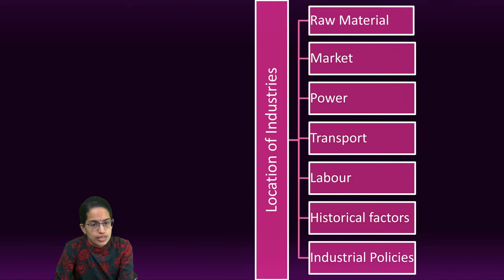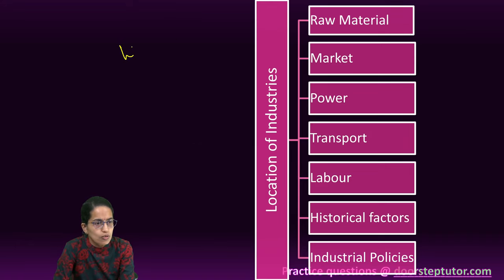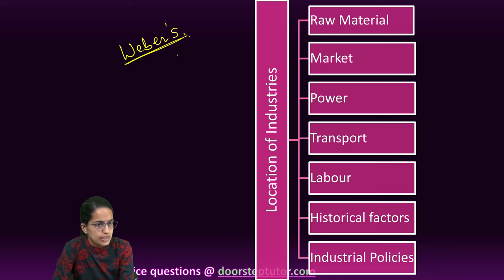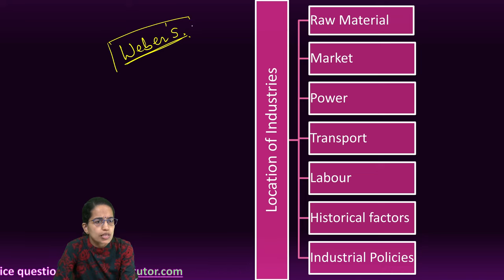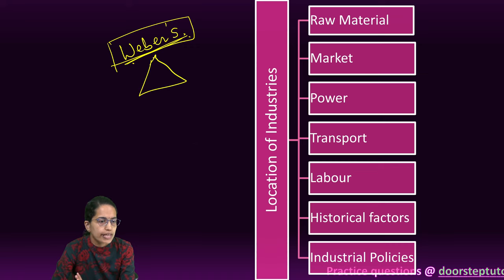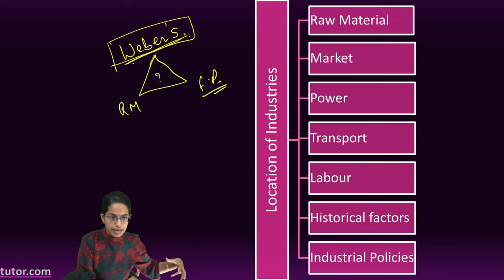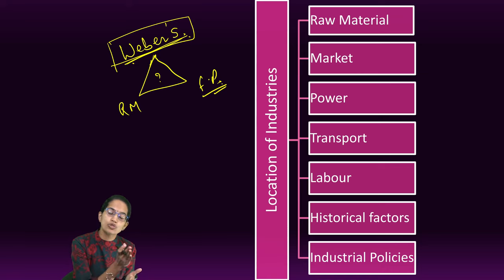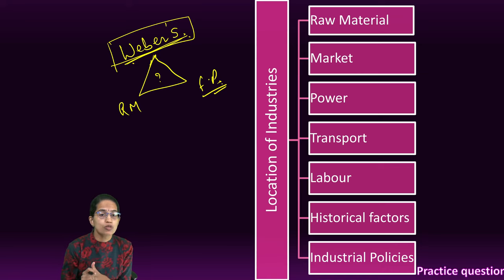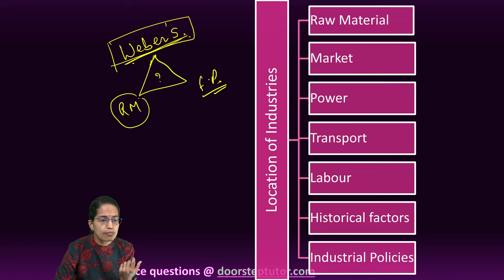Coming to the factors of location of an industry — this is a very interesting and important topic. In higher classes we would understand Weber's Theory for Industrial Location, one of the most common and popular theories. What was unique about Weber's Theory was the location triangle, which talked about where the industry would be located given raw material and finished product. Where raw material is heavy, the industry would be close to the raw material — for example, iron and steel uses lots of iron and coal, which is bulky to transport.